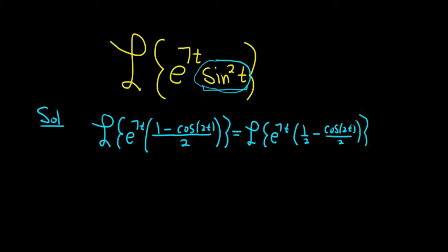Then we can distribute the e to the 7t and factor out the 1 half. So this is equal to 1 half Laplace, e to the 7t, minus 1 half Laplace.